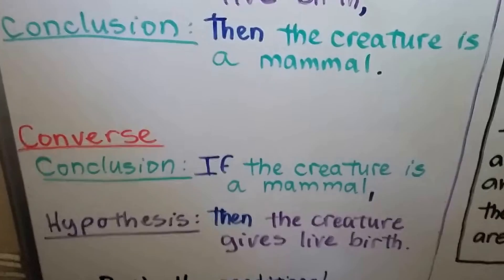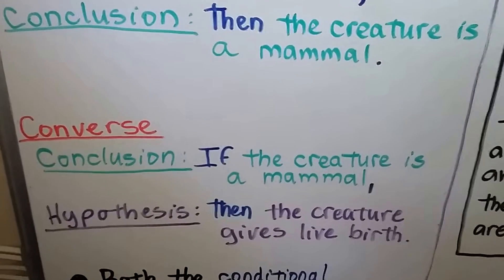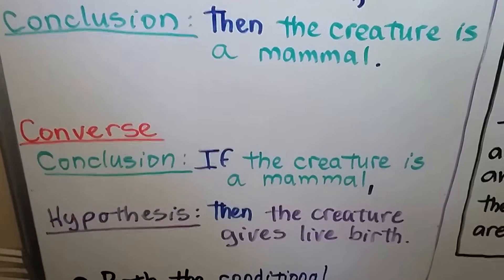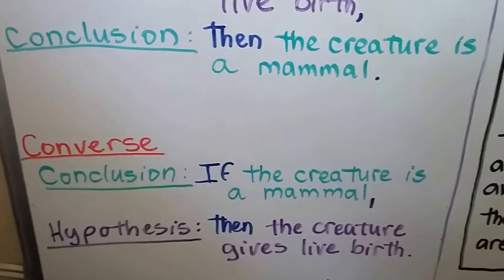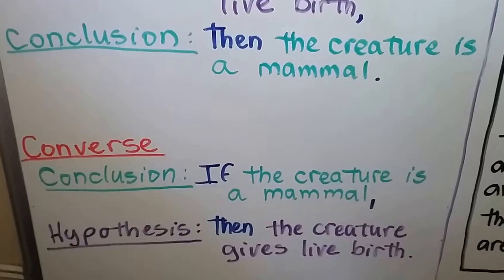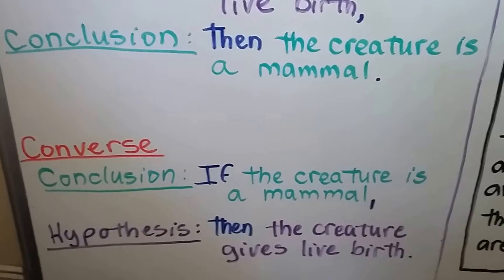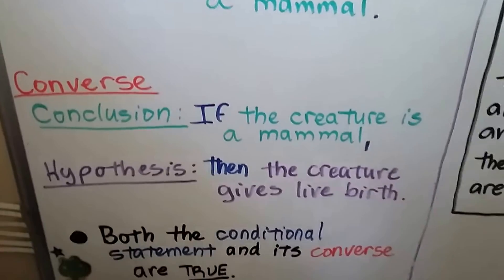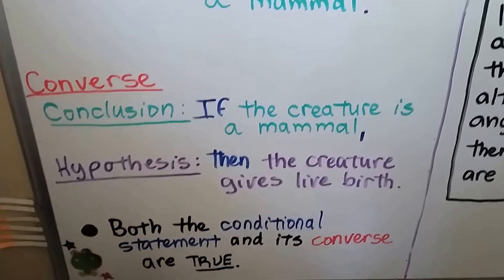The converse of this would be swapping the conclusion and the hypothesis so the conclusion is first: if the creature is a mammal, then the creature gives live birth. That's also true. But remember, when the converse is true, it must be stated as a postulate or proved as a separate theorem. So both the conditional statement and its converse are true.